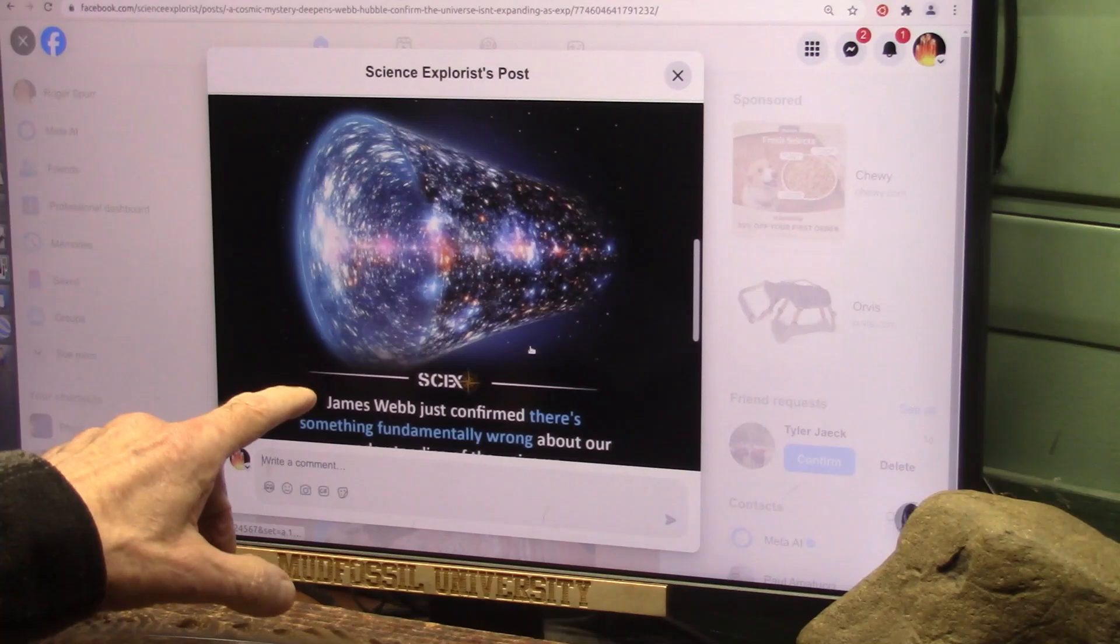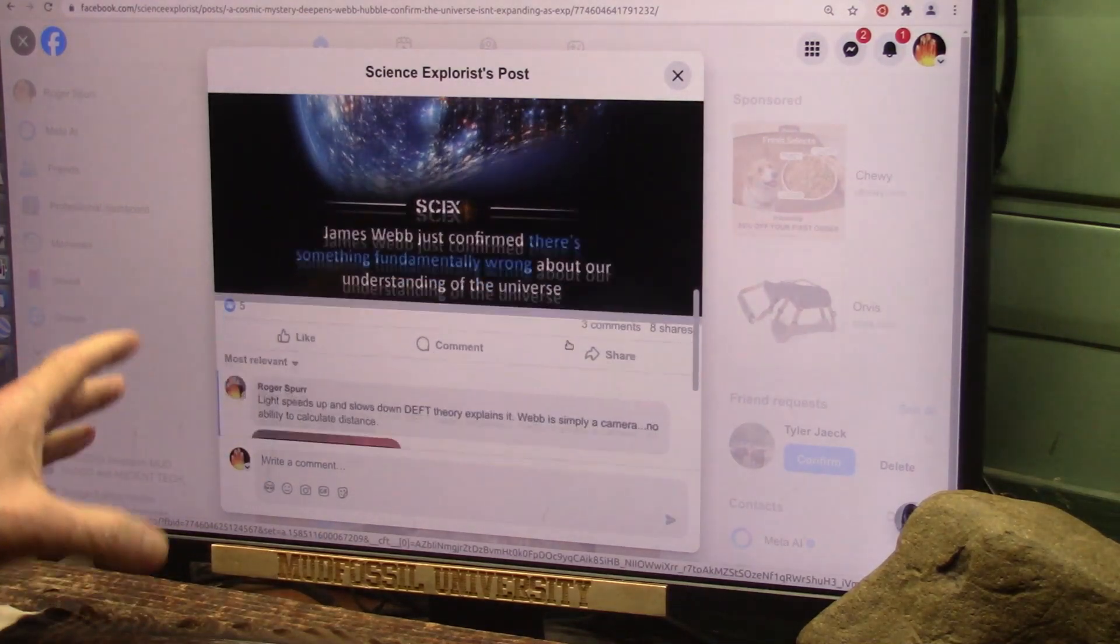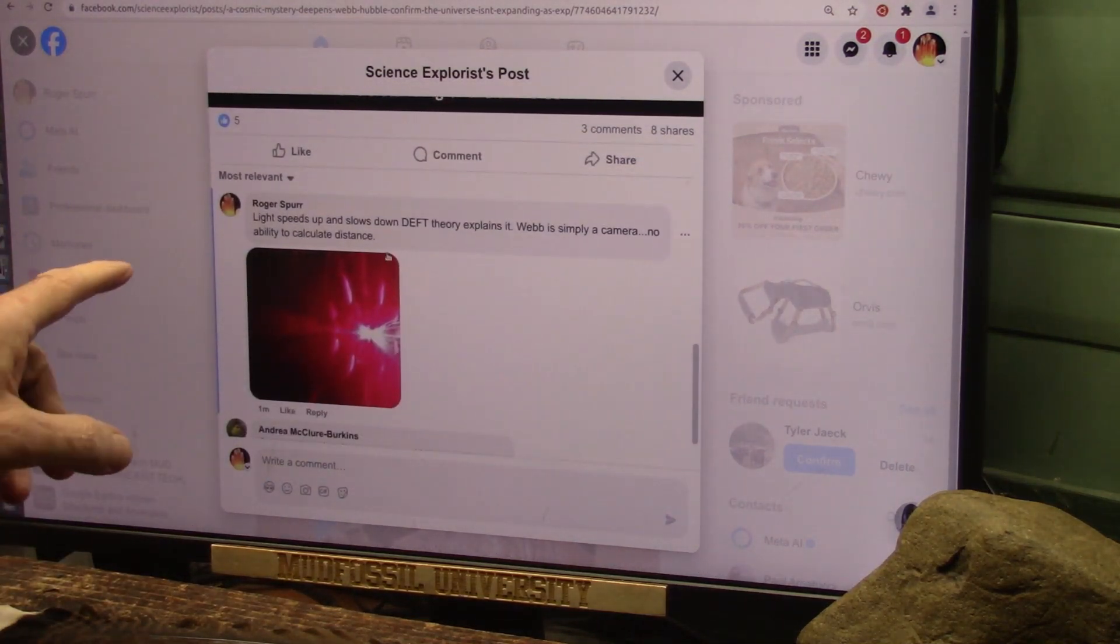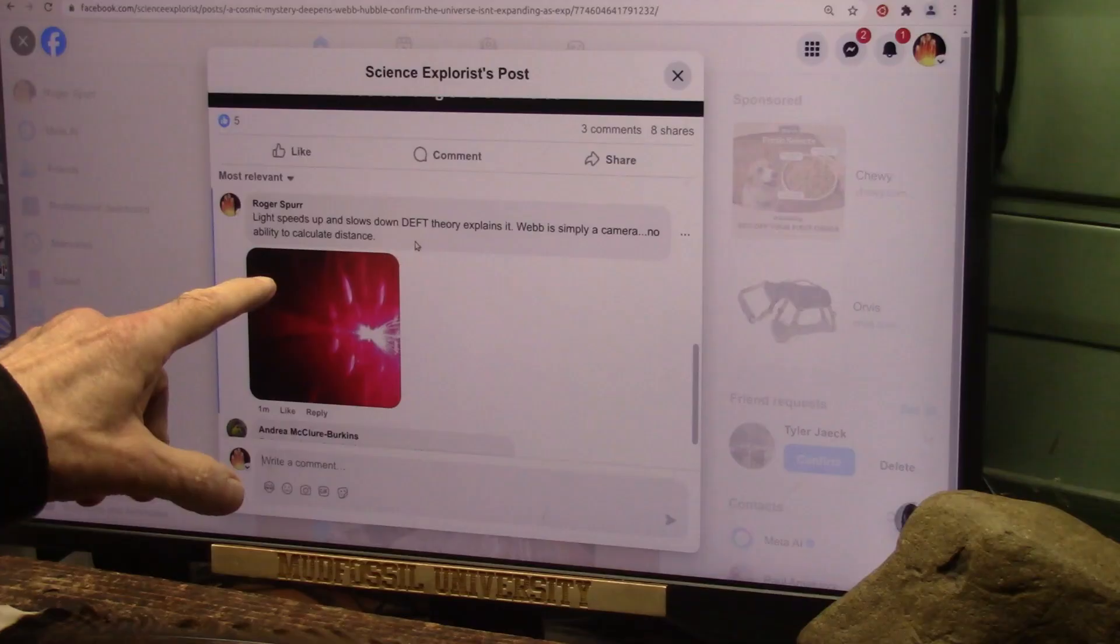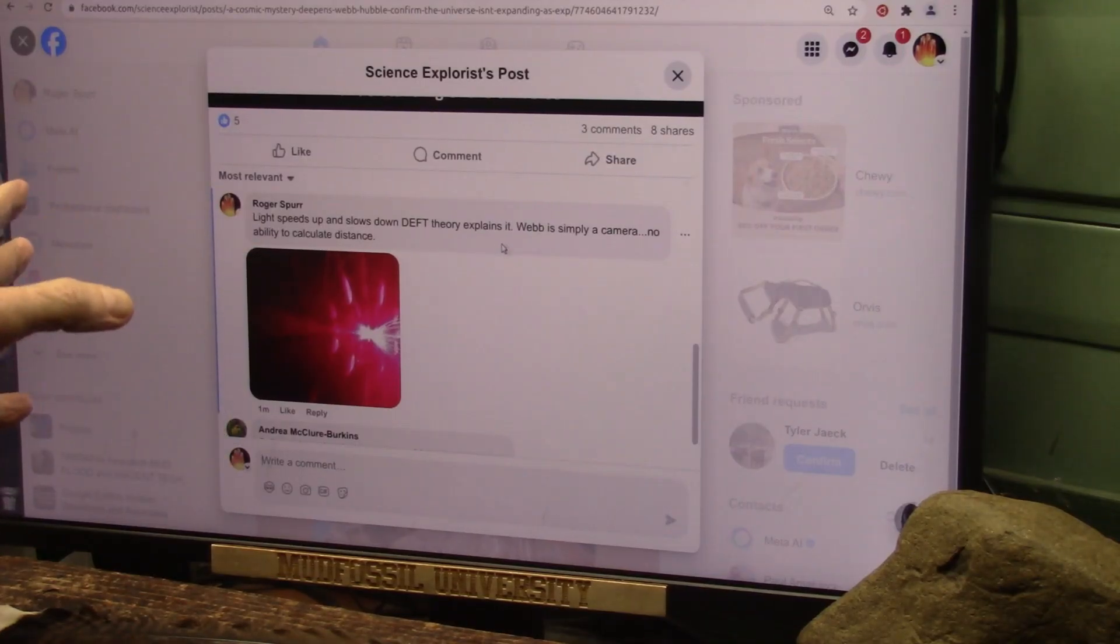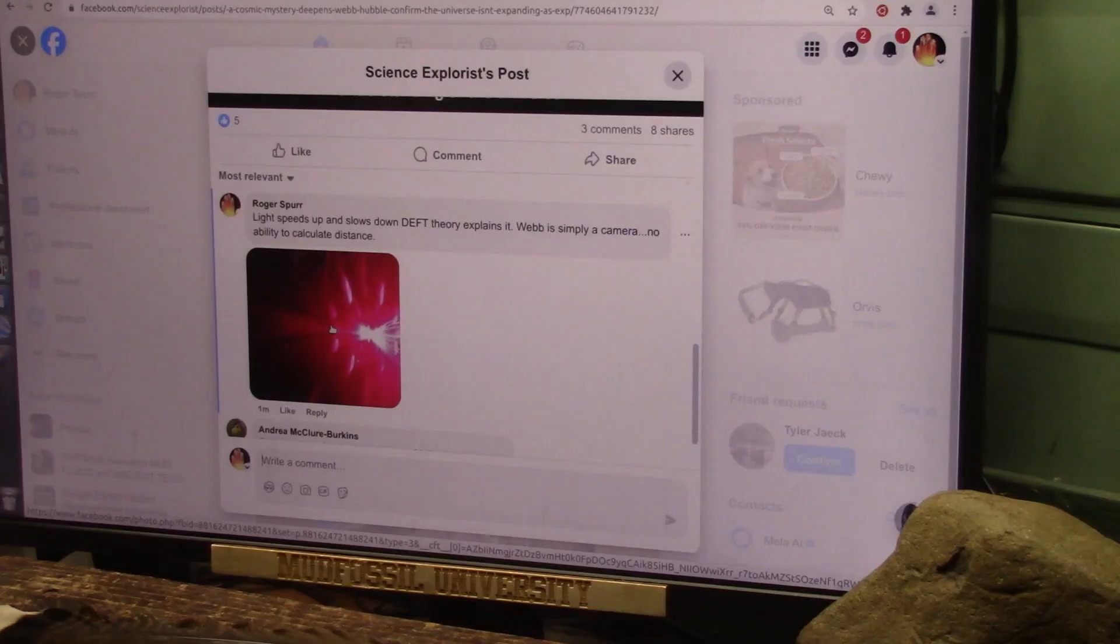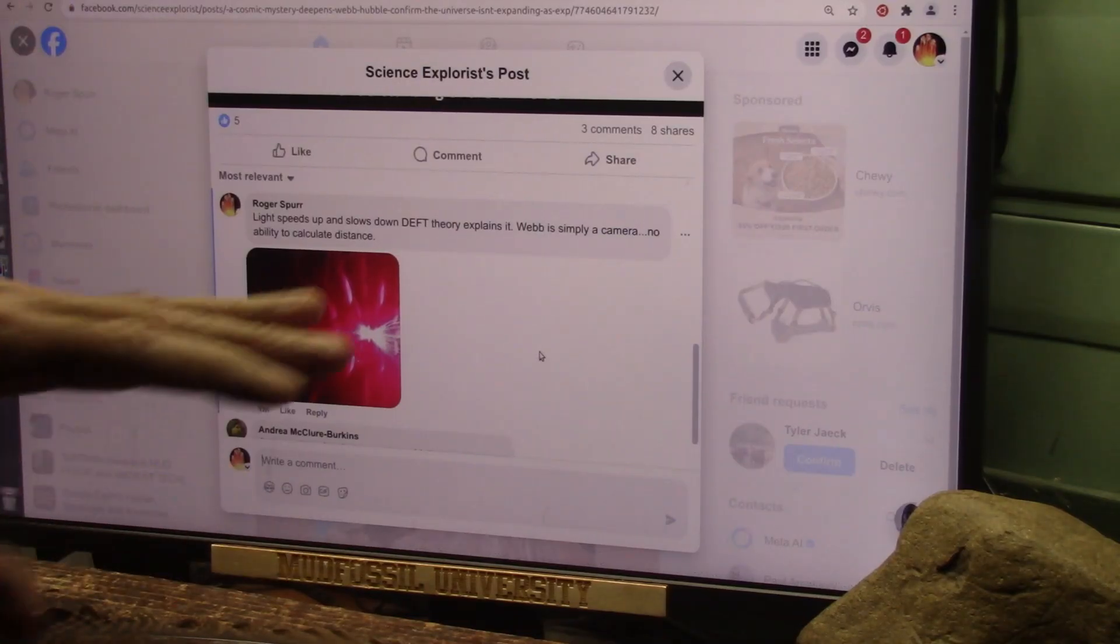All right, I commented on here, there's nothing wrong with our theory of the universe, except that it's not expanding the way they thought. Light speeds up and slows down. Deft theory explains it. Webb is simply a camera. There's no ability there to calculate distances. None.